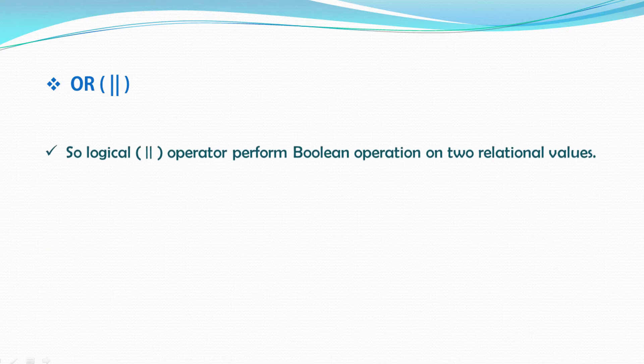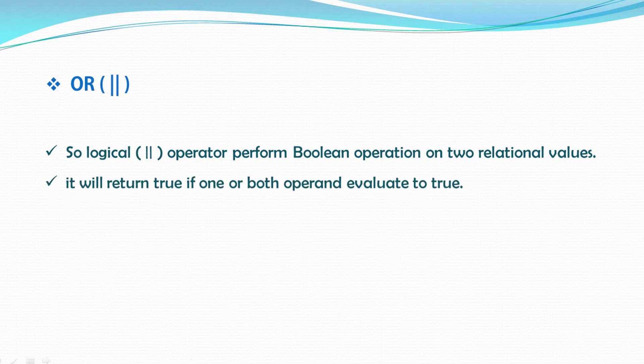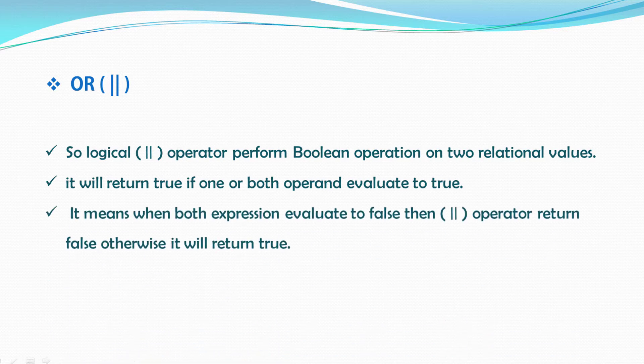The logical OR operator performs boolean operations on two relational values. It will return true if one or both operands evaluate to true. It means when both expressions evaluate to false, then the logical OR operator returns false. Otherwise, it will return true.